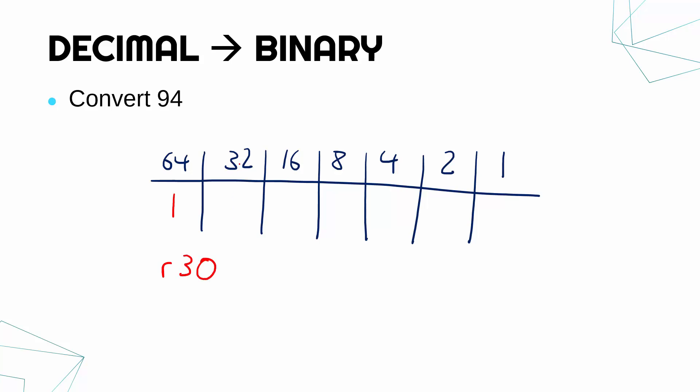Now 32 does not go into 30, it's too big, so I put zero. 16 does go into 30 once with a remainder of 14. 8 does go into 14 one time with a remainder of 6. 4 does go into 6 one time with a remainder of 2. 2 does go into 2 one time with no remainder. So we are done.